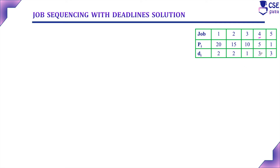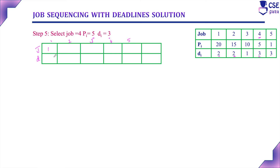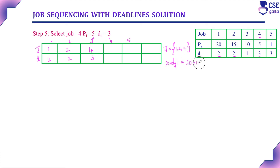Next, consider job 4 with profit 5 and deadline 3. In the first unit of time, job 1 is assigned; in the second unit of time, job 2 is assigned; so the third unit of time is available. We can assign job 4 to the third unit of time within its deadline of 3. Add job 4 to the job subset. Now jobs 1, 2, and 4 are selected, with profits 20, 15, and 5 respectively, giving a total profit of 40.